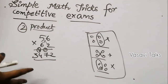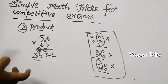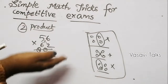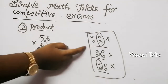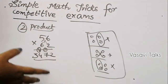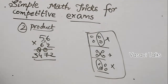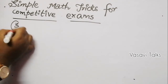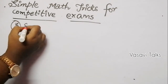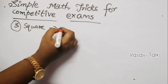This is how you multiply two large 2-digit numbers step by step using cross multiplication. Now, Trick number 3: finding the square of any number near 100.